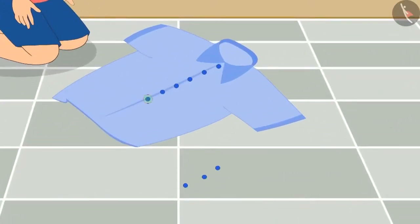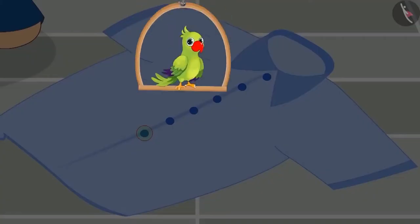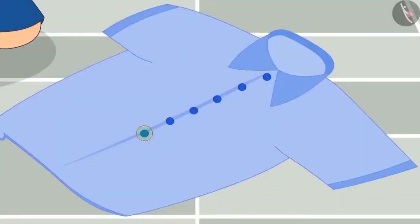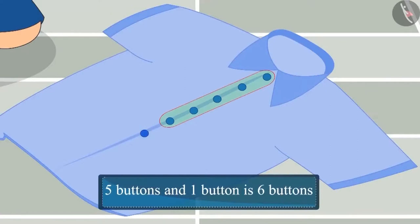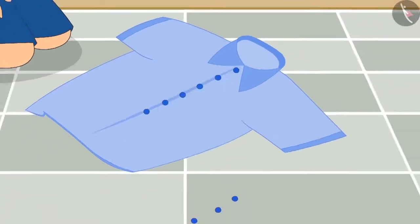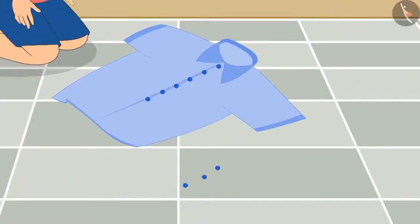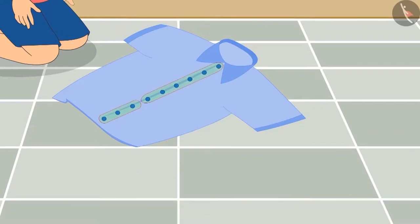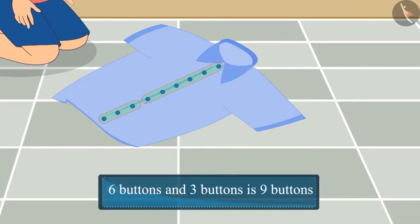Jutu stitched one more button after five buttons — five buttons and one button, there are a total of six buttons stitched on Jutu's shirt. In the end, Jutu stitched three more buttons on his shirt. So now there are six buttons and three more buttons. The total number of buttons stitched on his shirt is nine buttons.